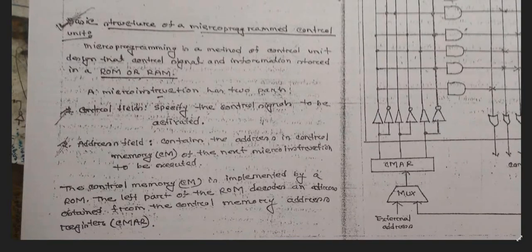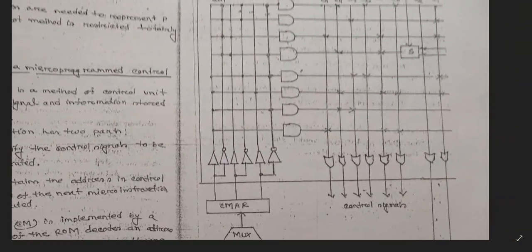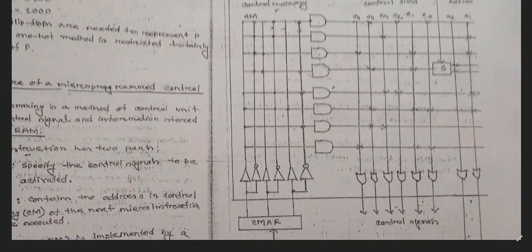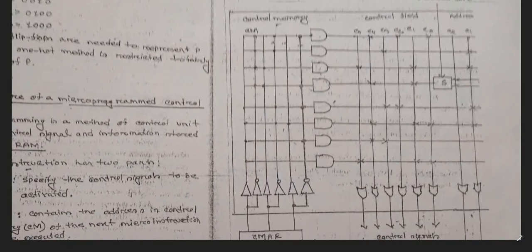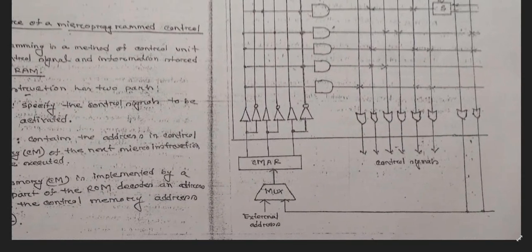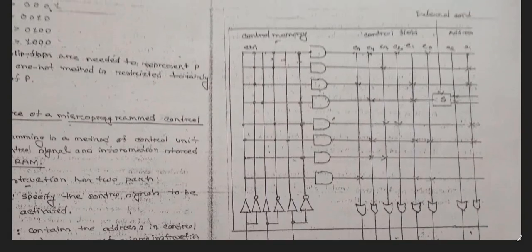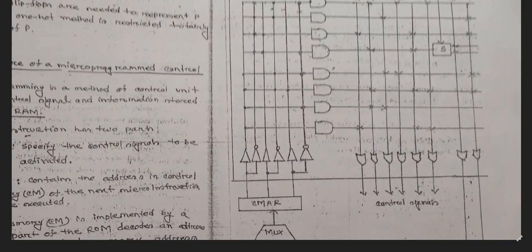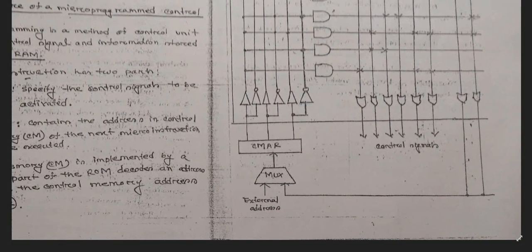The basic structure of the microprocessor control unit has control fields and address fields. Control is for the controlling section and address field is for the memory location. From this diagram, CM is for the control memory section and control fields are for the selection. First we generate the MUX multiplexer section, then go to the CMAR, then move on to the control memory section. From those outputs we connect the lines and fix the output, then the control signal is generated.